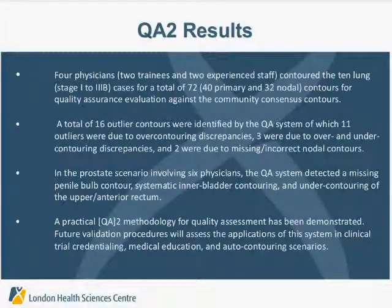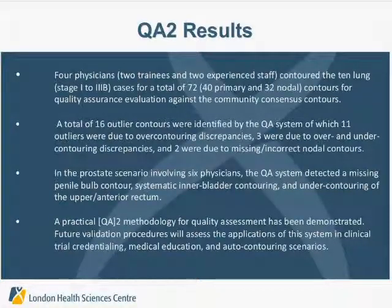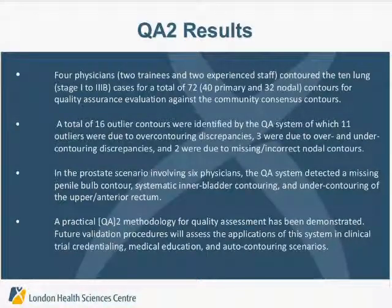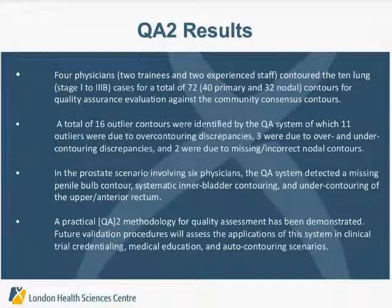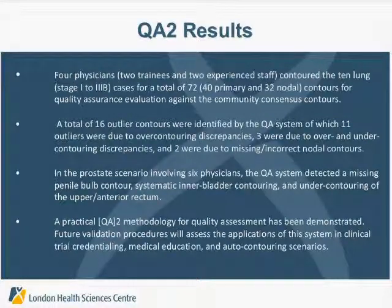We had four physicians contour the 10 lung cases who were not involved with the community, giving a total of 72 comparisons. Out of those 72, we found 16 outlier contours: 11 due to over-contouring, three due to both over- and under-contouring. Interestingly, we caught two contours due to either missing or totally incorrect nodal contours — one person didn't put a nodal contour at all, and another contoured the wrong nodal area entirely, which the system picked up as an outlier.